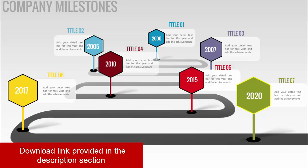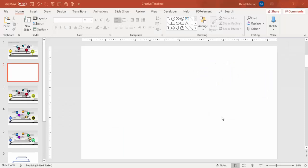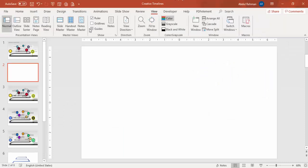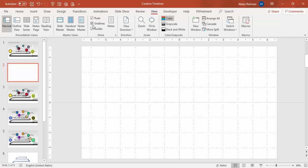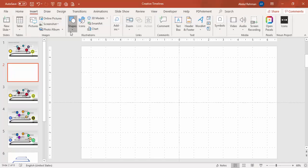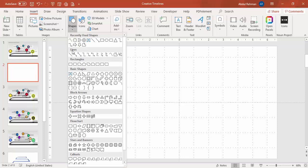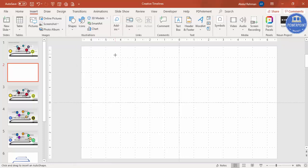Let's see how to create this in PowerPoint. Add a new slide, go to View and enable the guides and gridlines. Then go to Insert > Shapes and from the Lines section select the Freeform shape. You can see the gridlines and guidelines with the horizontal and vertical lines in the center.